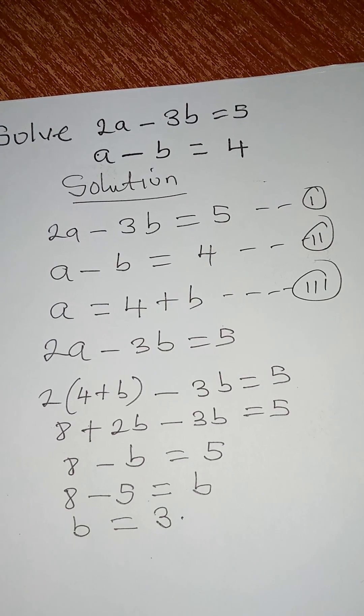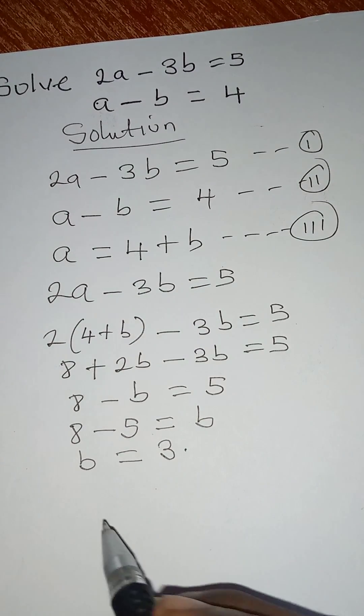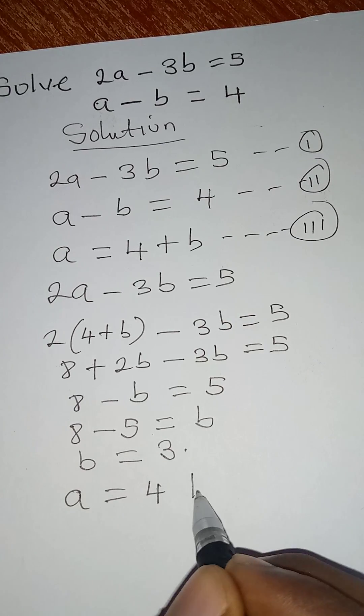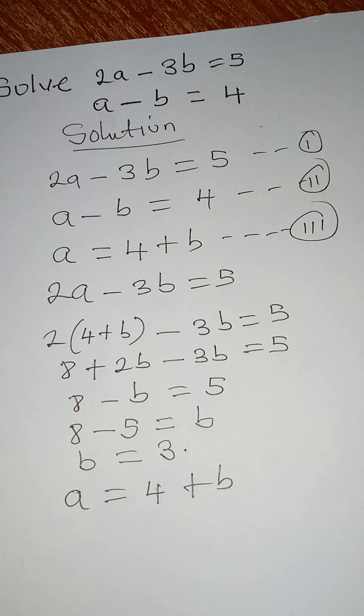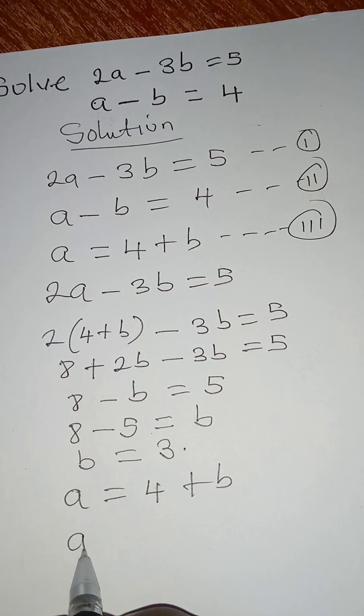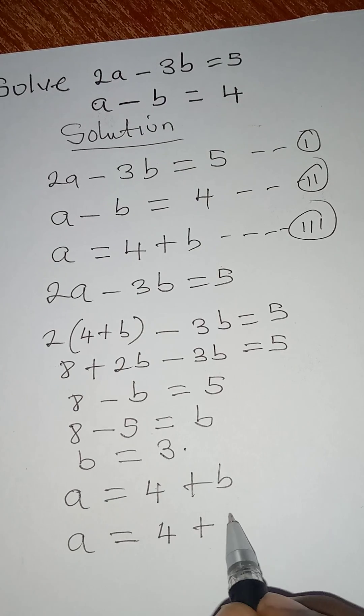Now we know the value of b. To get the value of a it will go back to equation 3 where we have a to be equal to 4 plus b. You can see it from here equation 3. So this means that a will now be equal to 4 plus our b is 3.